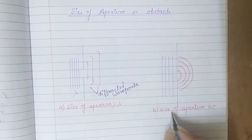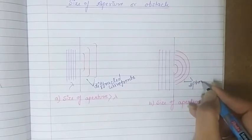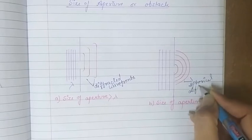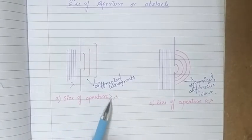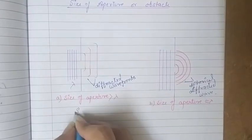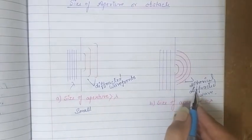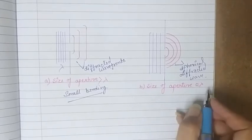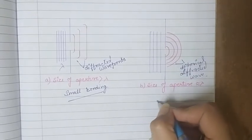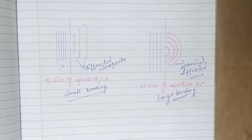If the size of the aperture is comparable to or approximately equal to the wavelength, the bending obtained is comparatively large and the diffracted waves are almost spherical. While in the case where size of aperture is greater than the wavelength, the bending is small and the diffracted wavefronts are not as curved. So when aperture size is approximately equal to the wavelength, we observe large bending and the waves obtained are spherical.